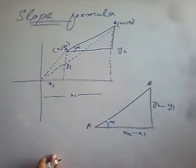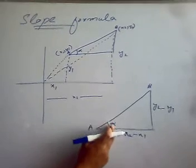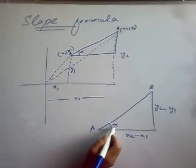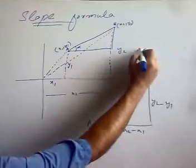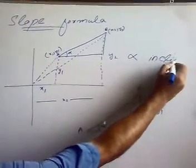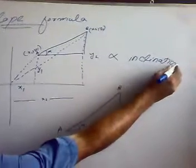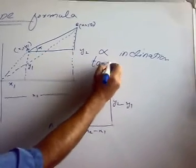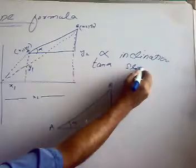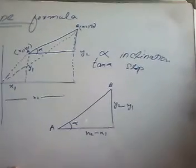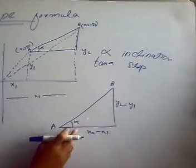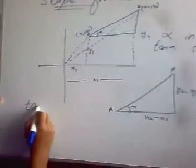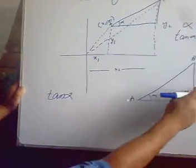So actually the slope is tangent of this angle. And this angle is actually called inclination. Alpha is our inclination, and tangent of alpha is our slope. So by using basic identities of trigonometry we can say that tangent of alpha equals perpendicular over base.